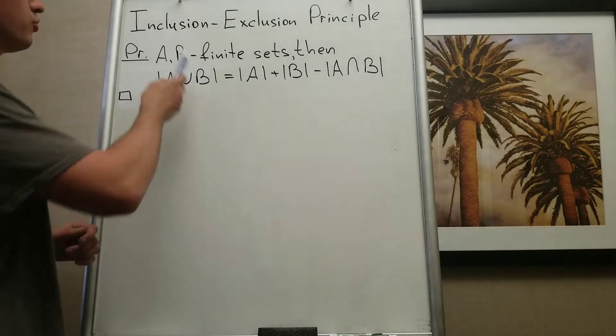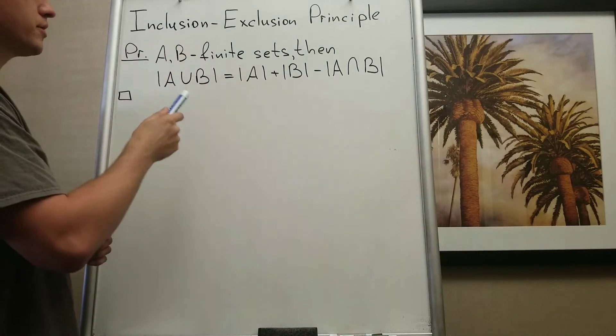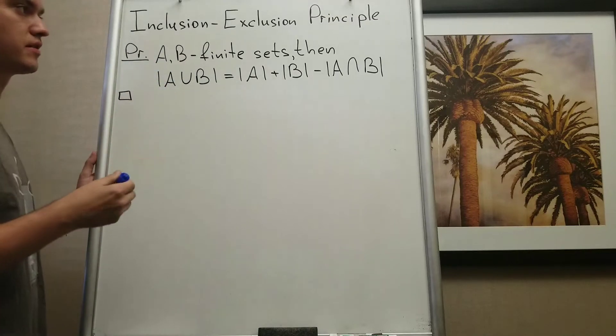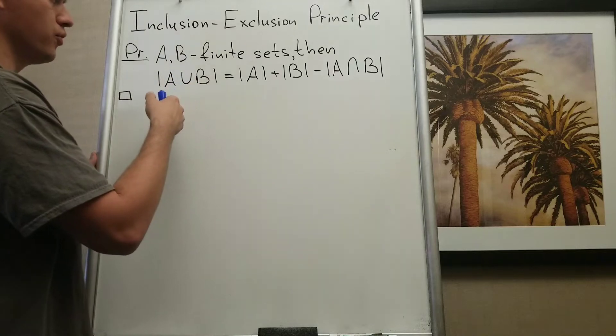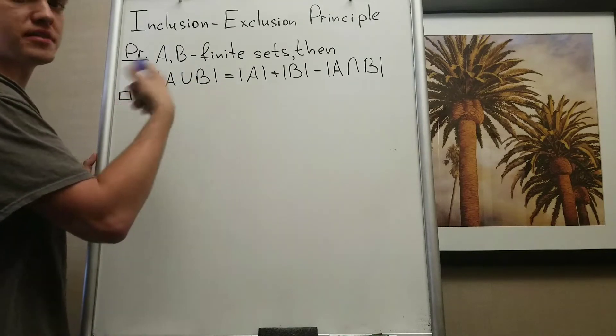Hello everyone! In this video I want to prove the inclusion-exclusion principle in the case when I have two finite sets. And why I'm using this proof?